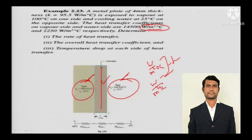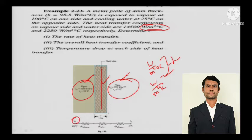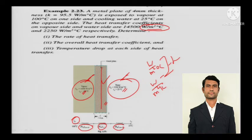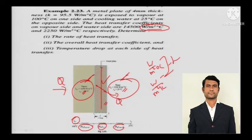To build the thermal resistance circuit — the analogous electrical circuit for thermal resistance — the heat first encounters the convective thermal resistance on the vapor side, then the conduction resistance through the metallic plate, and finally the convective thermal resistance on the water side. Heat transfers from 100°C to 25°C through this series of resistances.